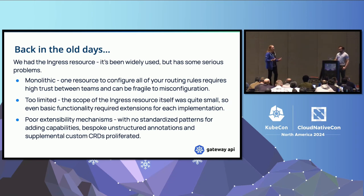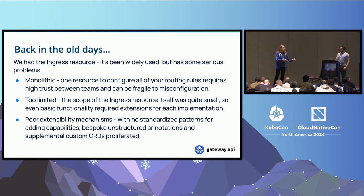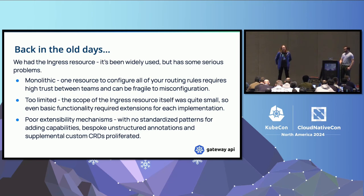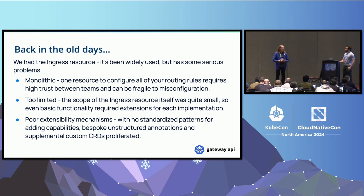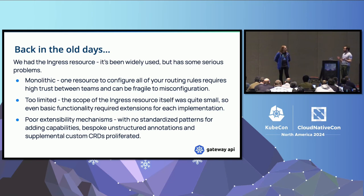It's also impossible to use RBAC to limit what application developers can do without also limiting cluster engineers. And there was poor extensibility: the way ingress grew up, it was really difficult to add new things in a reasonably structured way, so people gave up trying. Even for functionality specific to a particular implementation, with Gateway API we still wanted to make sure there was a common pattern and framework for doing that kind of stuff.